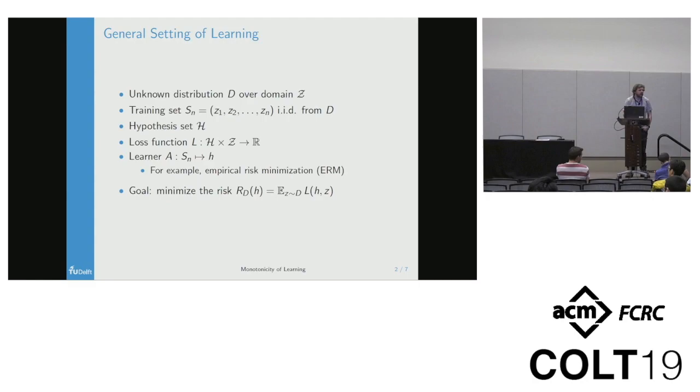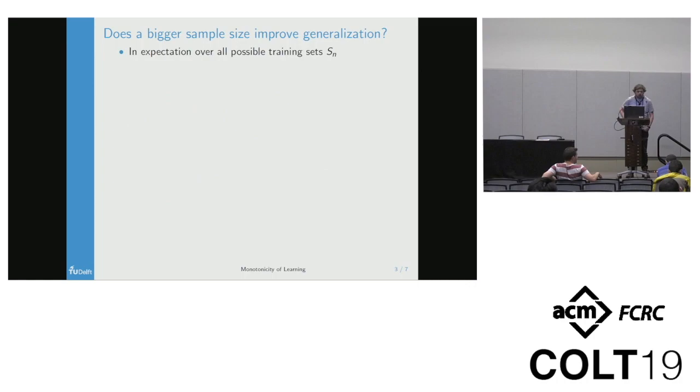In this open problem, we're in the general setting of statistical learning. We have an unknown distribution D over a domain Z, a training set SN of size N IID sampled from this distribution, a hypothesis set H, a loss function L, and a learner A. The goal is to minimize the risk RD of the returned hypothesis.